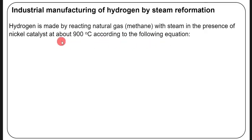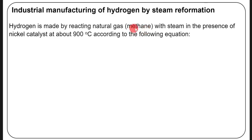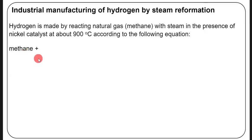In section C, when you are asked to describe how hydrogen is prepared by steam reformation in industries, you start by saying: hydrogen is made by reacting natural gas, which is methane, with steam in the presence of a nickel catalyst at about 900 degrees Celsius, according to the following equation. Then you write the equation: methane reacted with steam.